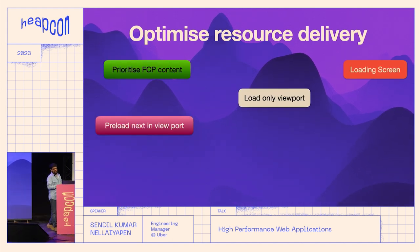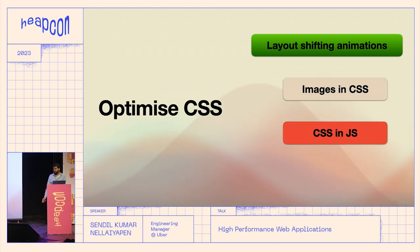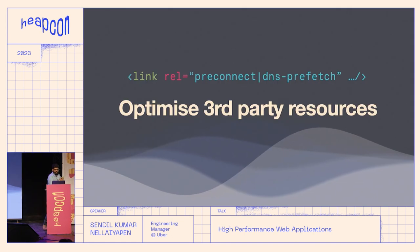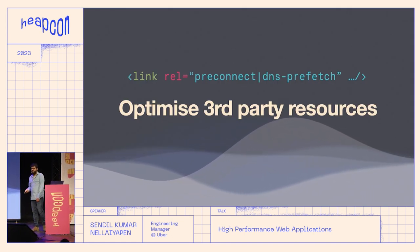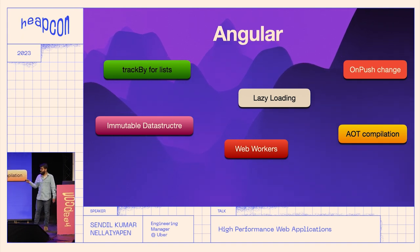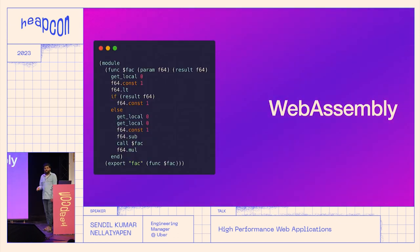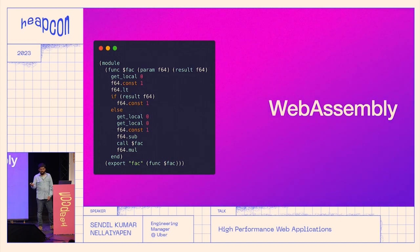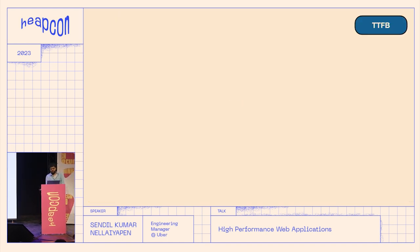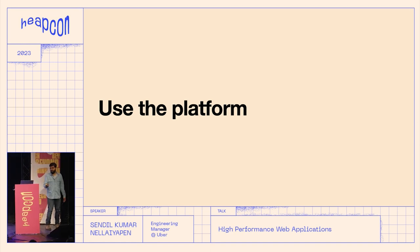Overall, performance optimization is not an end goal — it's a continual process. Optimize resource delivery by prioritizing bfcache and removing unused resources. Optimize CSS by removing unused CSS and avoiding layout-shifting animations. Avoid long rendering tasks and optimize third-party resources using preconnect or dns-prefetch. For Angular specifically: use trackBy for list manipulation, use web workers, and use lazy loading. If you really want to go further, consider WebAssembly to increase performance. Use profilers — they are helpful. Perception matters in terms of performance. Use the platform you have to improve your application.